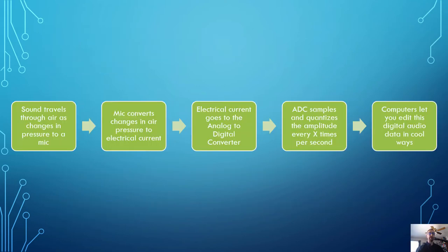Sound travels through the air as changes in air pressure and eventually this hits a microphone. The mic converts changes in air pressure into electrical current. The electrical current goes to what is called the analog to digital converter or the ADC. The ADC samples and quantizes the amplitude that it is receiving from the microphone every x number of times per second. Then that goes to the computer, and computers let you edit this digital audio data in cool ways.